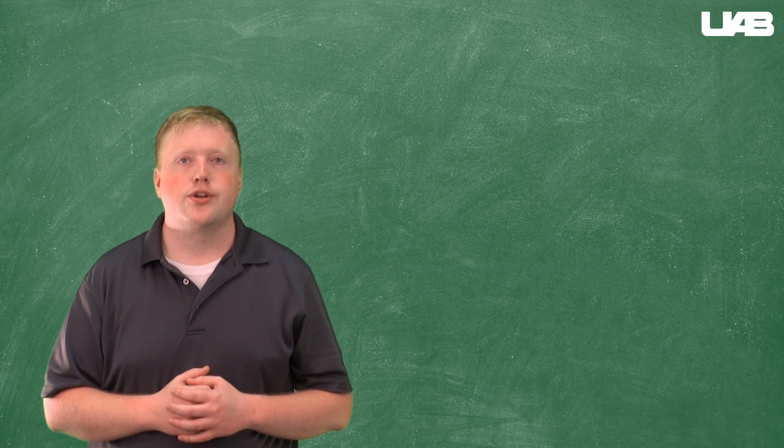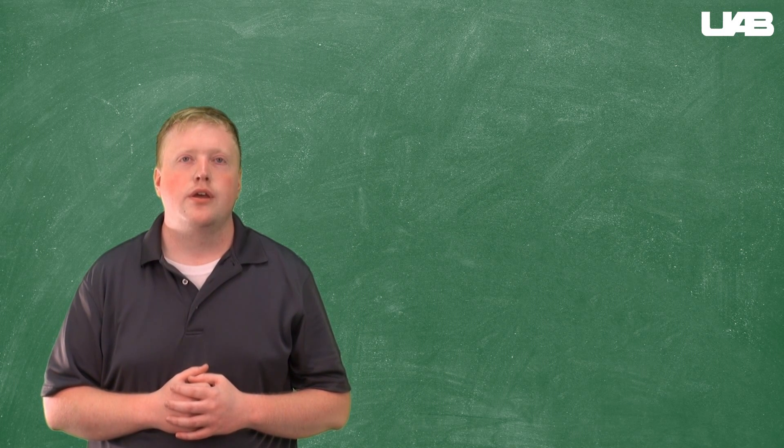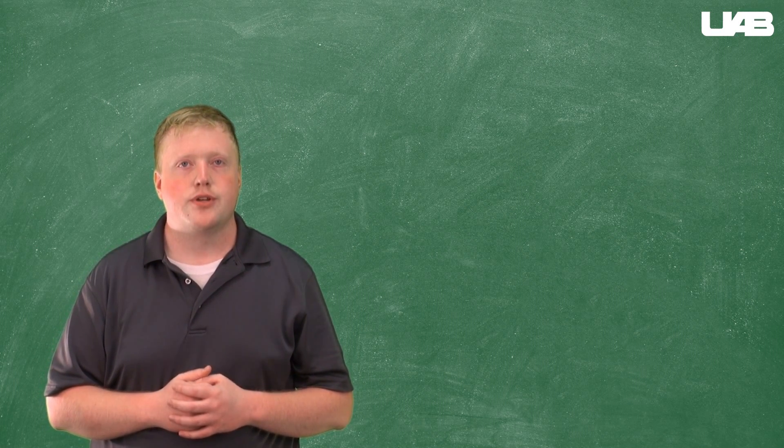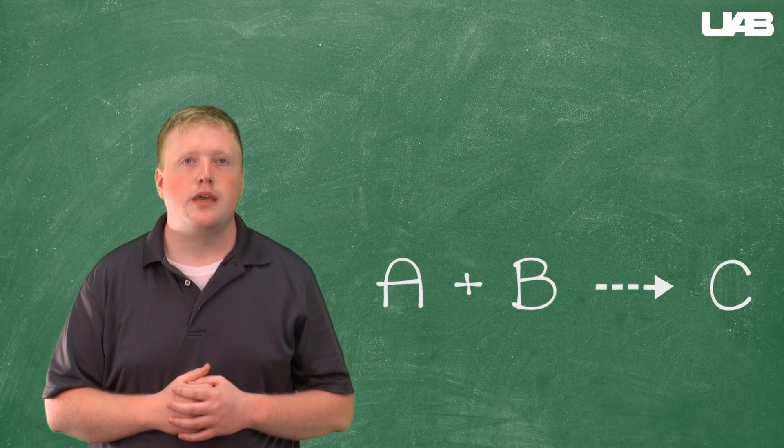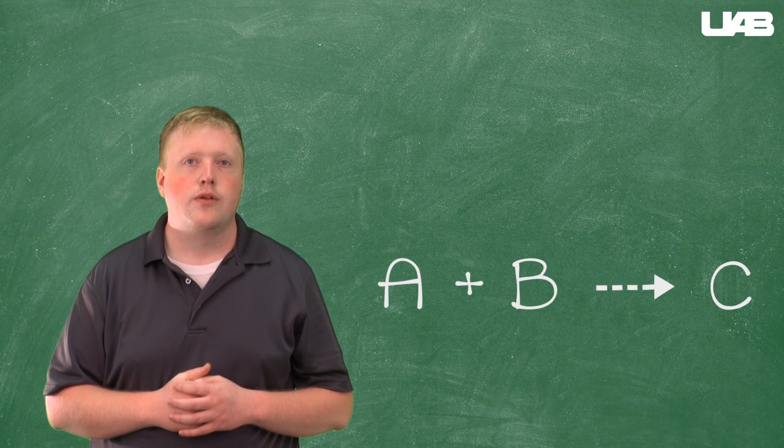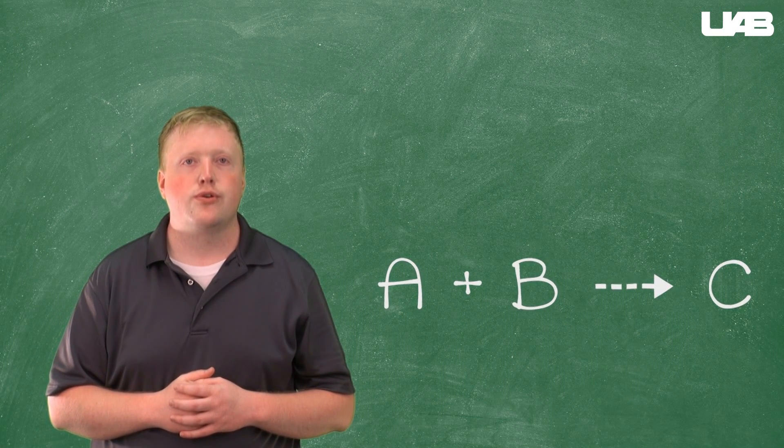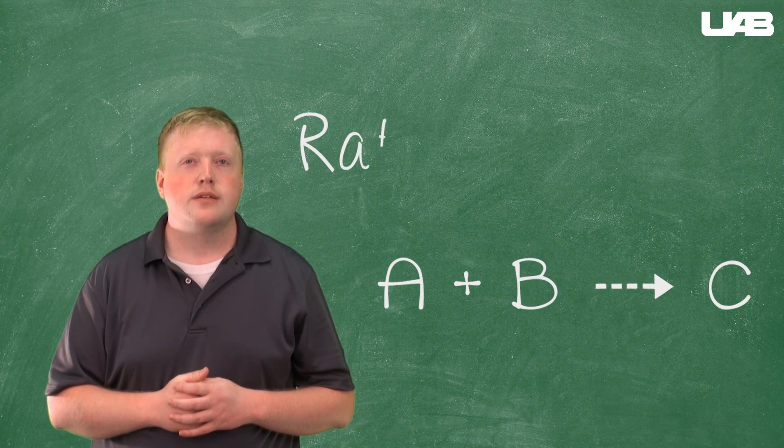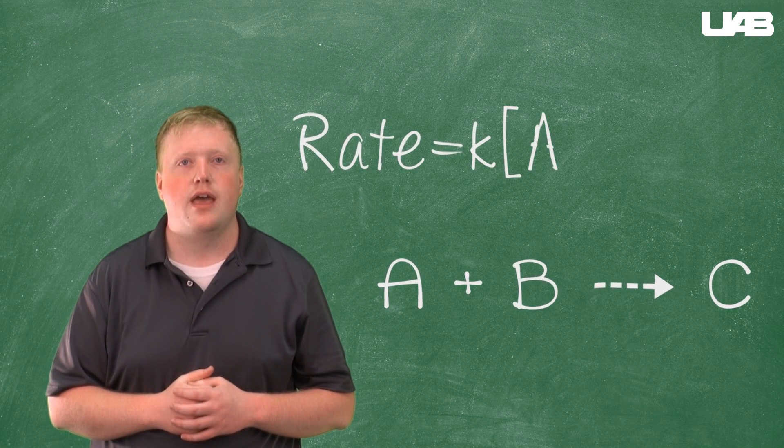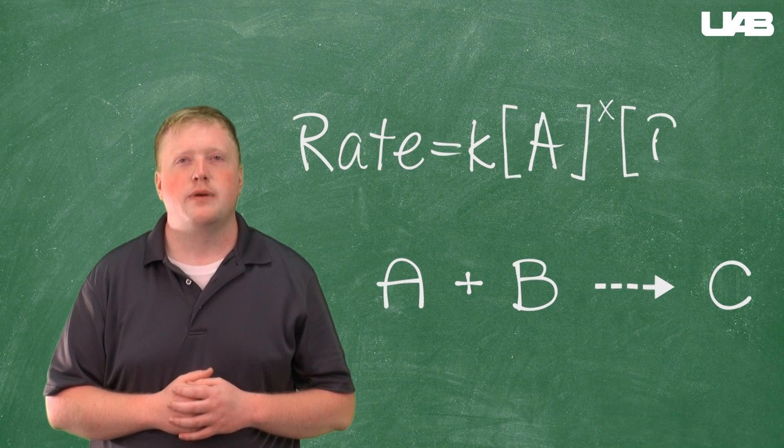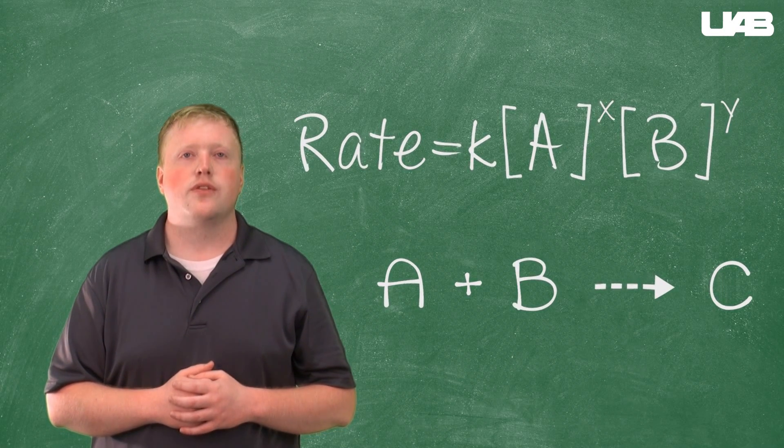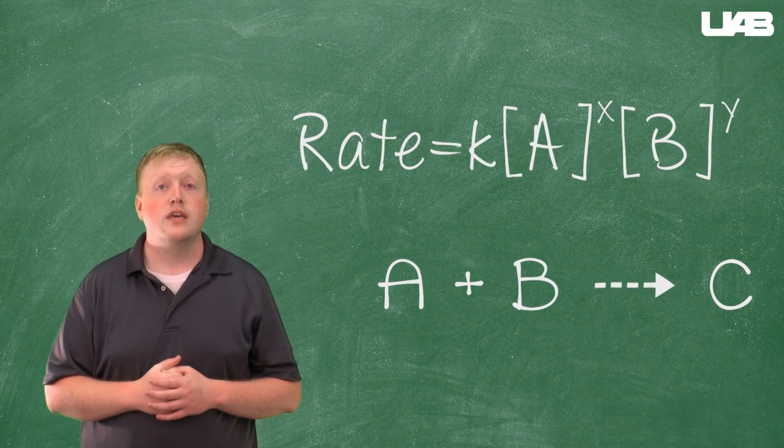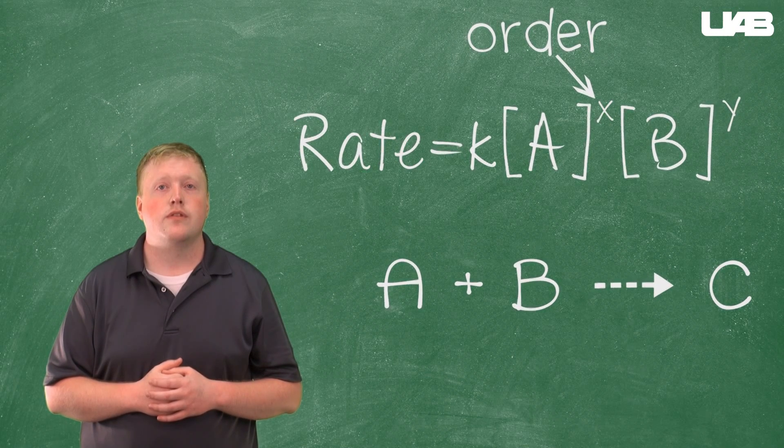The rate at which a reaction occurs can be calculated using its rate law expression. For the general reaction A plus B yields C, the rate law expression has the general form: rate equals K times the concentration of A raised to the x power times the concentration of B raised to the y power. The chemist calls these powers the order.